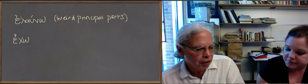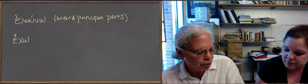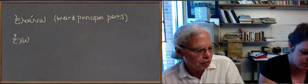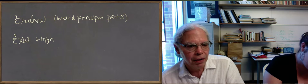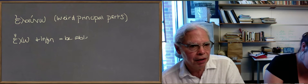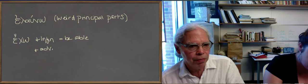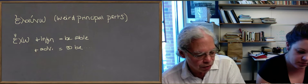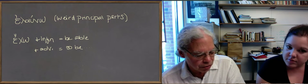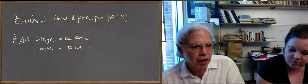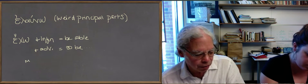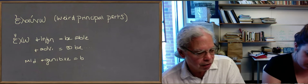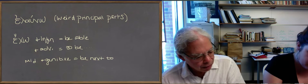With an infinitive, when it's followed by an infinitive, echo plus infinitive, it competes with dunamai. In other words, it means to be able. When you use it with an adverb, so you can say kalos echo, it means to be. So plus an infinitive, to be able, plus an adverb, just to be. Interesting idioms associated with this verb. And also the book tells you, and nicely so, that in the middle, it means to cling onto something, to hold onto something, in other words, or to be next to something with a genitive object.